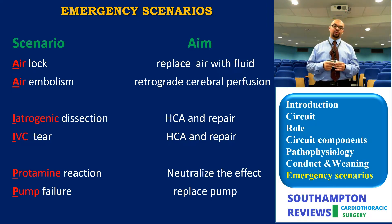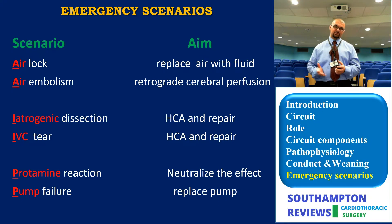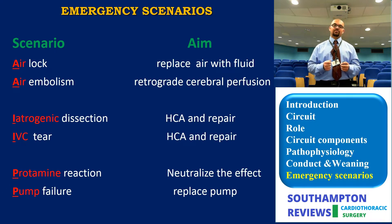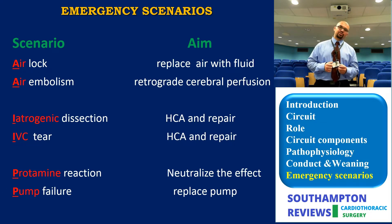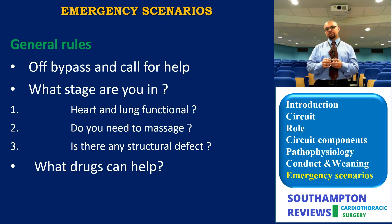The emergency scenarios include airlocking, air embolism, iatrogenic dissection — for instance IVC tear — which are the two biggest disasters in my view, as well as protamine reaction and pump failure. The main aim during airlock is to flush the air out with fluid. During air embolism, the aim is to establish retrograde cerebral perfusion to flush air out of the cerebral circulation. In iatrogenic dissection you are trying to achieve circulatory arrest and repair it. In IVC tear, if it's a small tear you can fix it quickly without bypass, but if it's a big tear you'll have to go on bypass to repair it. In protamine reaction, you need to understand the type of reaction and neutralize its effect. In pump failure, you need to replace the pump.